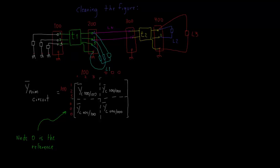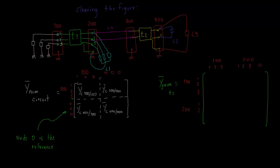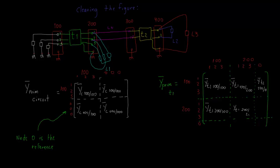Now, let's come back to our system's drawing and take a look at the transformer T1. It has two terminals with a total of seven nodes. Then its Y-primitive matrix should be a 7x7 matrix. It's connected to nodes 1, 2, and 3 at bus 100, and to nodes 1, 2, 3, and the reference at bus 200. We want to keep the admittances connected to the reference in a separate sub-matrix, for reasons that will be explained later. Then we can define nine sub-matrices in Y-prim T1.